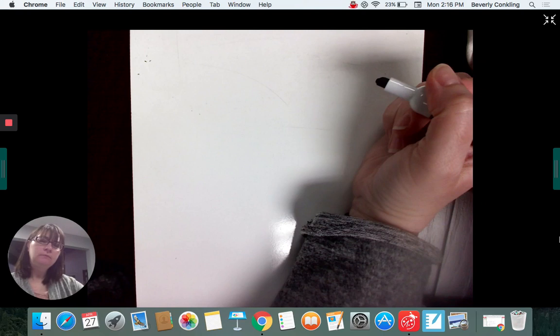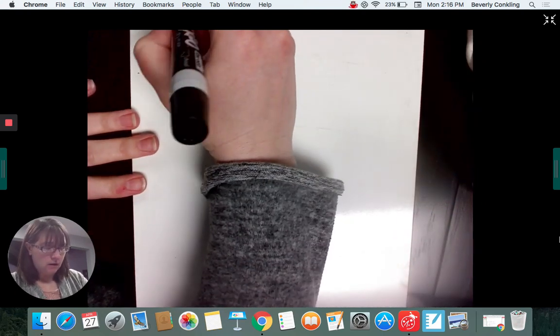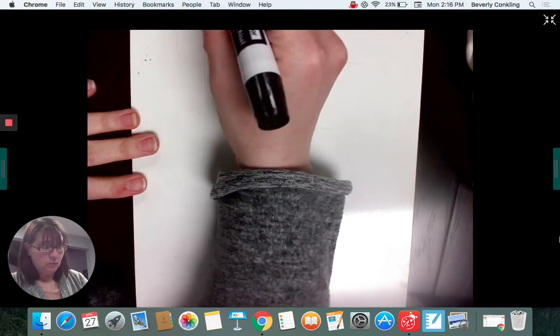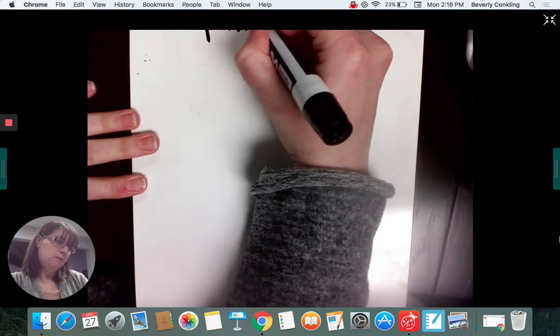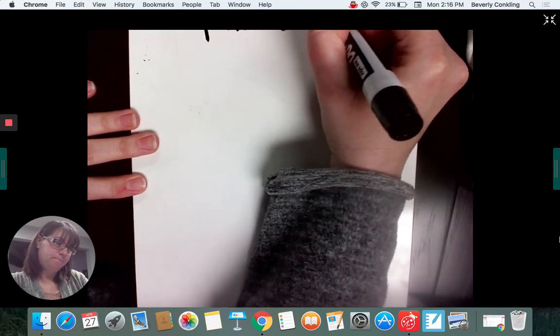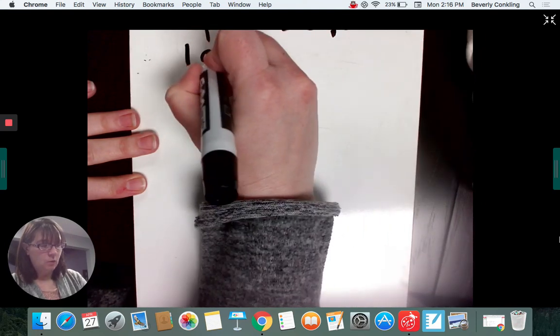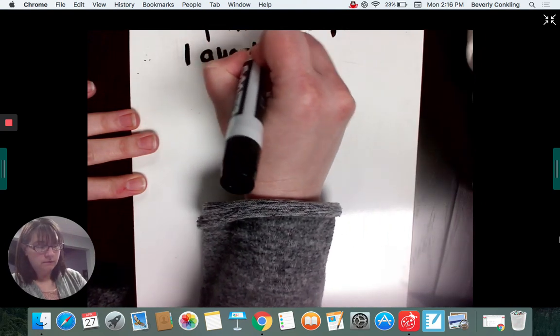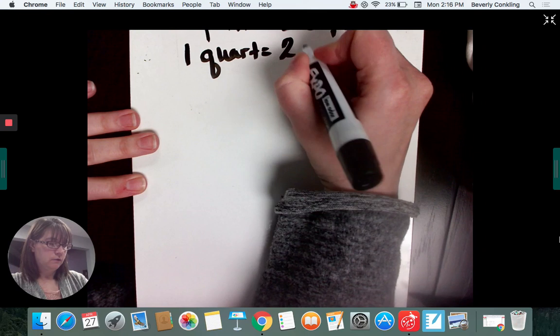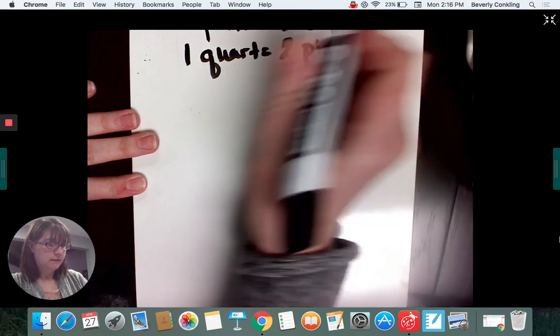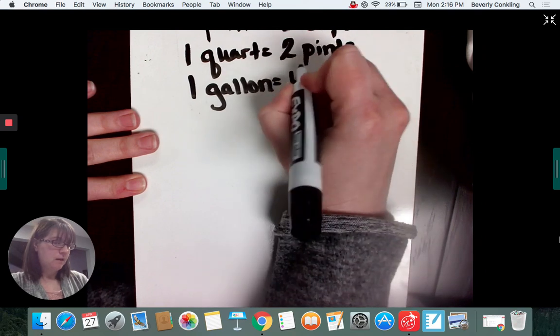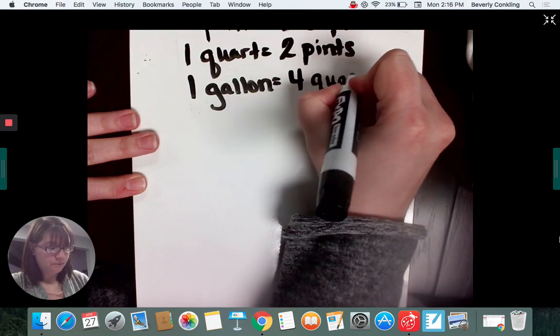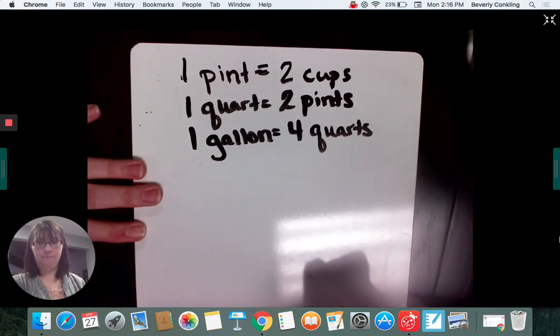And so there is, in one pint, there are two cups. In one quart, there are two pints. In one gallon, there are four quarts.